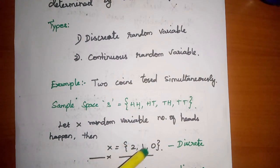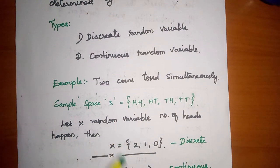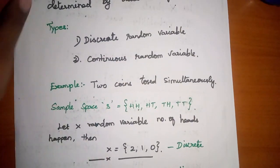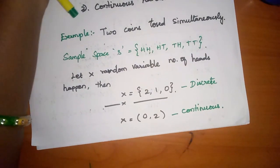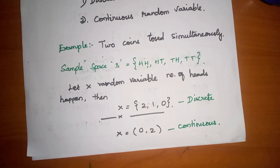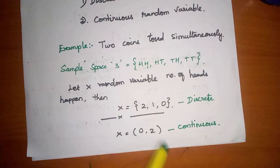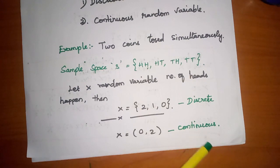If you see an interval, like values between 0 and 2 including decimals such as 0.111, 0.11125, 1.555, that is a continuous range. A discrete random variable uses a set bracket with specific values like {0, 1, 2}. If you see a continuous interval instead of specific values, then it is a continuous random variable.